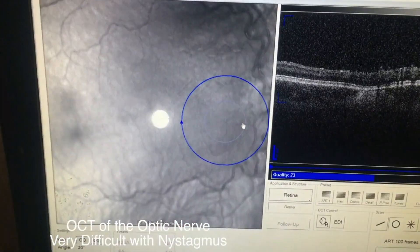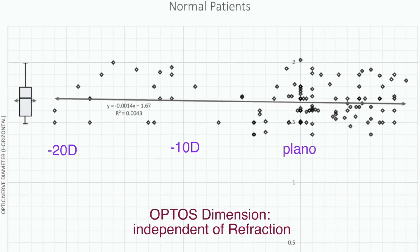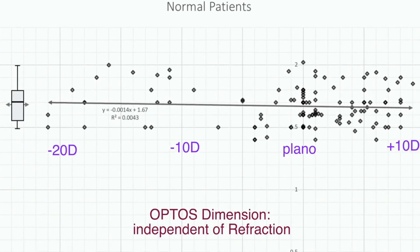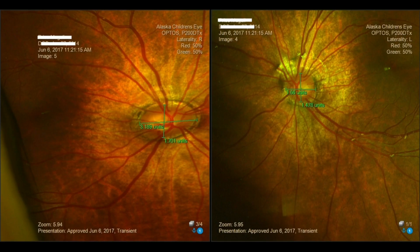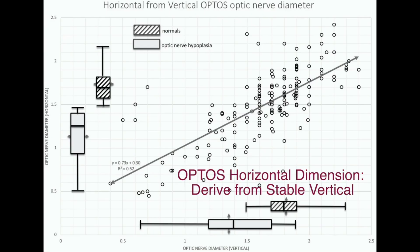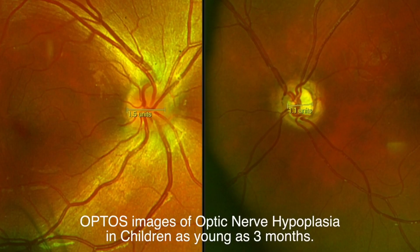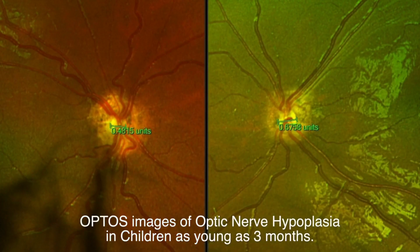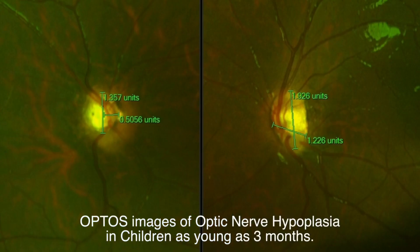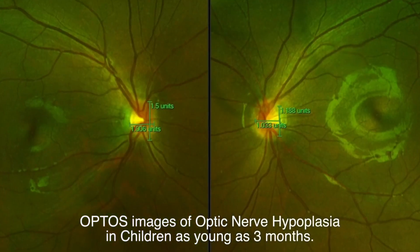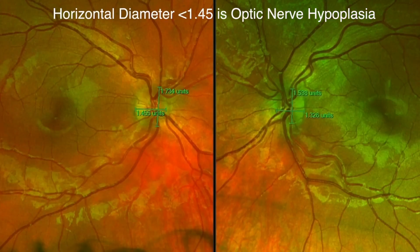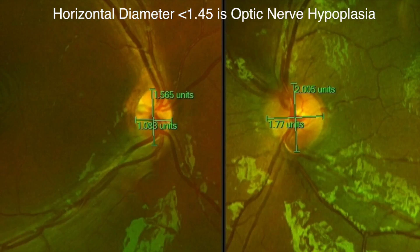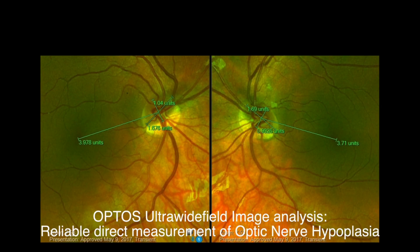OCT is very unreliable in the presence of nystagmus. Optos is independent of refractive error and correlates well with OCT; horizontal dimension can be estimated from a reliable vertical dimension. These are images from children less than one year of age with optic nerve hypoplasia measured on Optos Ultra Wide Field Imaging. A horizontal diameter less than 1.45 correlates with optic nerve hypoplasia.